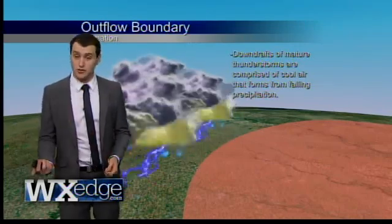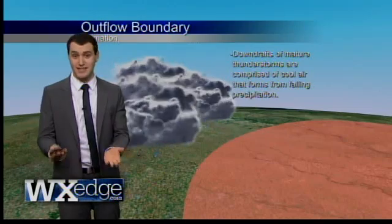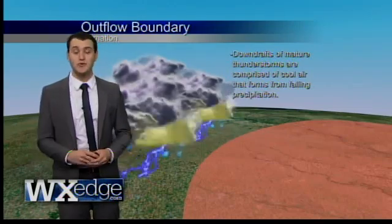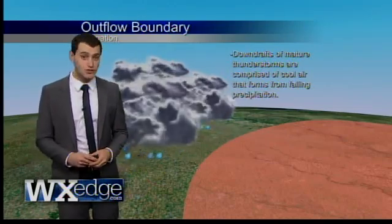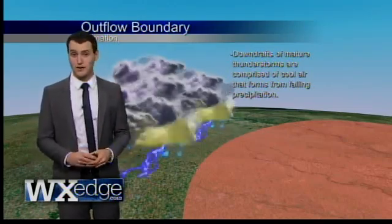After a thunderstorm forms, it usually rains — correct? Correct. Now, this rain is cold, usually a lot colder than the surrounding air.